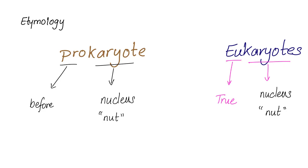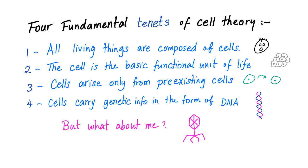Just kidding. There are four fundamental concepts of cell theory — well, three classic ones and a fourth that is very brand new. First: all living things are composed of cells. Second: the cell is the basic functional unit of life. Third: cells arise only from pre-existing cells. And fourth: cells carry genetic info in the form of DNA.